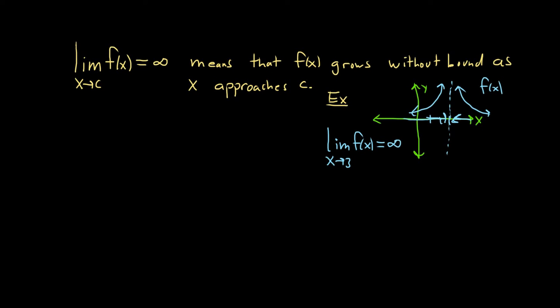Now, it doesn't mean that the limit exists. The limit still does not exist. But this is a more descriptive answer. It tells us what's happening to the function when x gets close to 3. So it's better than just putting DNE.